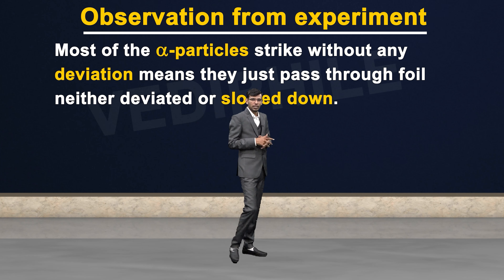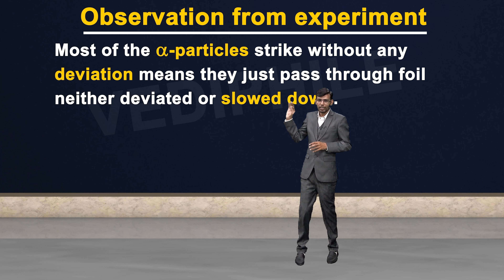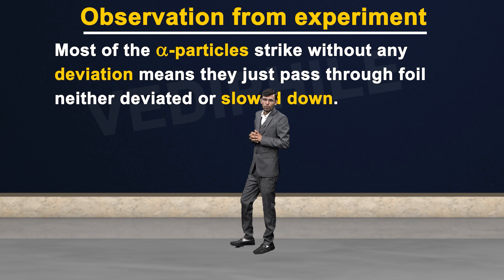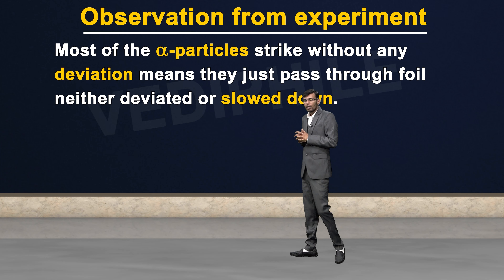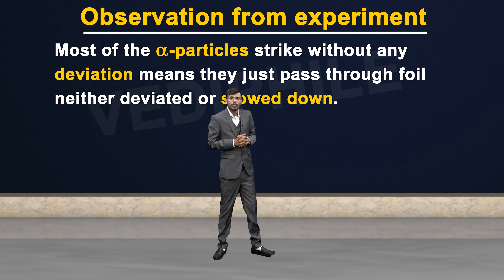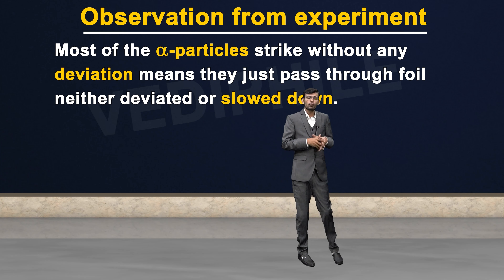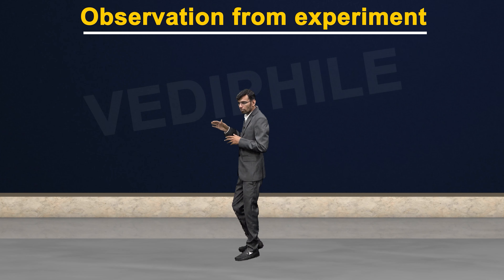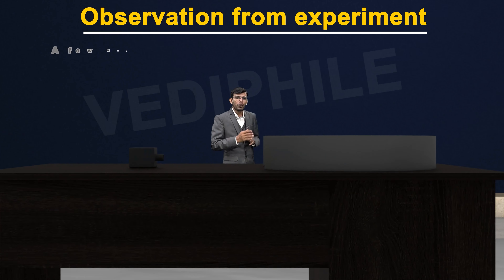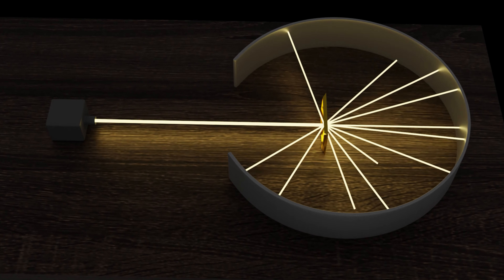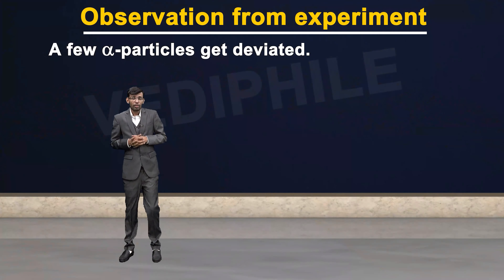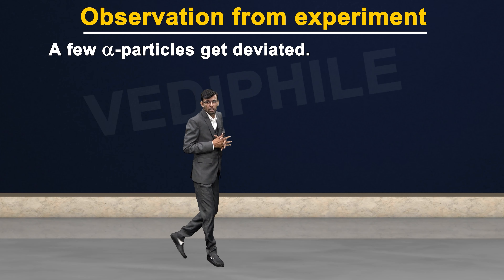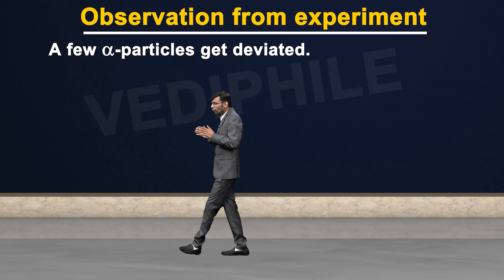This means there is free space inside. Note this carefully because on this basis we will draw conclusions — the conclusions given by Rutherford. The second observation was that some alpha particles were deflecting at small angles.